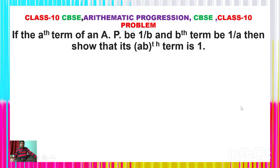Let's see — here is the problem for you. Look at the problem: if the ath term of an AP is 1/b and the bth term is 1/a, then show that its ABth term is 1.